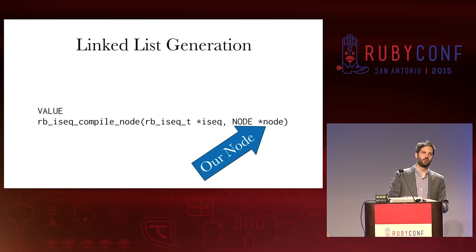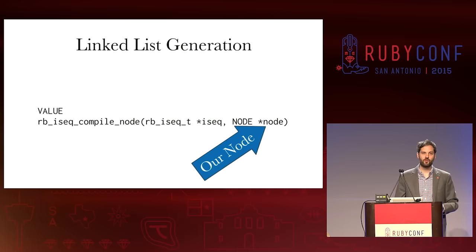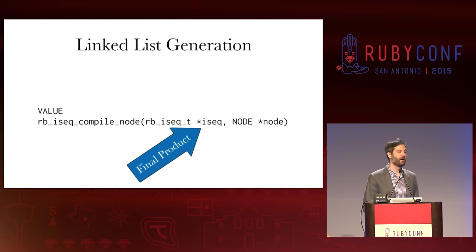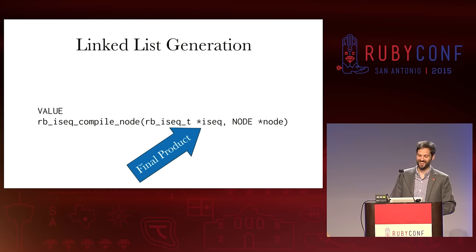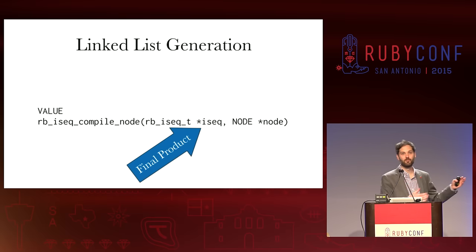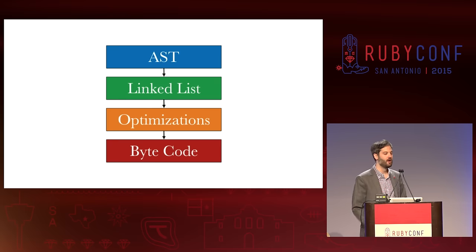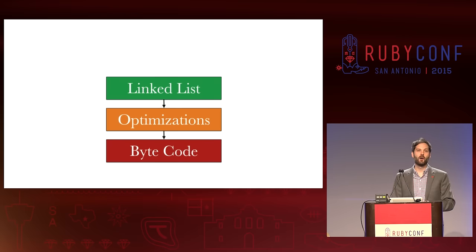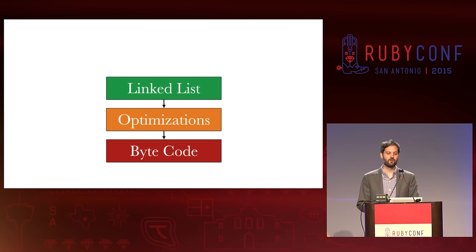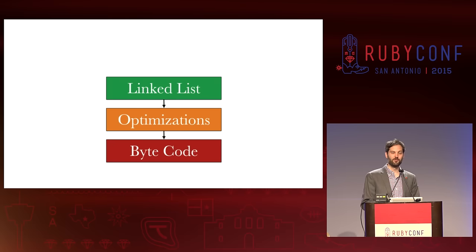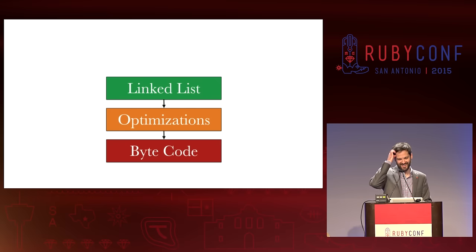Like any great C program, the return value is actually right there — one of the parameters. That's actually our final product: the compiled down bytecode itself. We're going to actually have to dive into this. This function is actually responsible for generating the linked list, doing any optimizations on the code, and then creating the bytecode itself. One function with one responsibility — yes, love that.